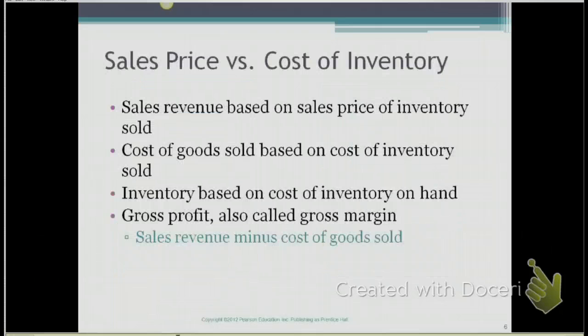Sales revenue minus the cost of goods sold is called gross profit, but sometimes it is also called gross margin. Sales revenue is based on the selling price of the item that we sell. Cost of goods sold is based on the cost of the inventory item that we bought. So the cost of goods sold is based on the purchase price we paid for the item that we sold.